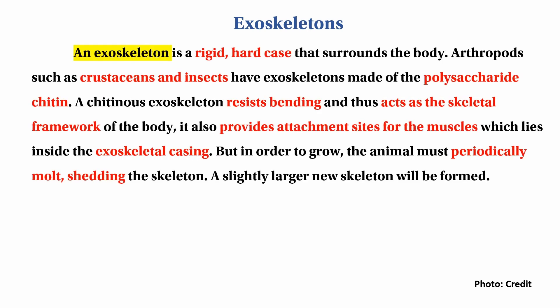The exoskeleton is a rigid, hard case that surrounds the body. It is the outer casing of the body. These hard cases are found in crustaceans and insects.